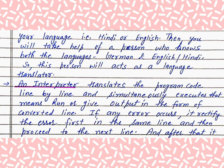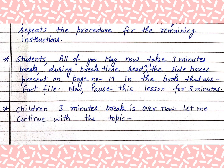An interpreter translates the program code line by line and simultaneously executes — that means runs or gives output in the form of the converted line. If any error occurs, it rectifies the error first in the same line and then proceeds to the next line. After that, it repeats the procedure for the remaining instructions.